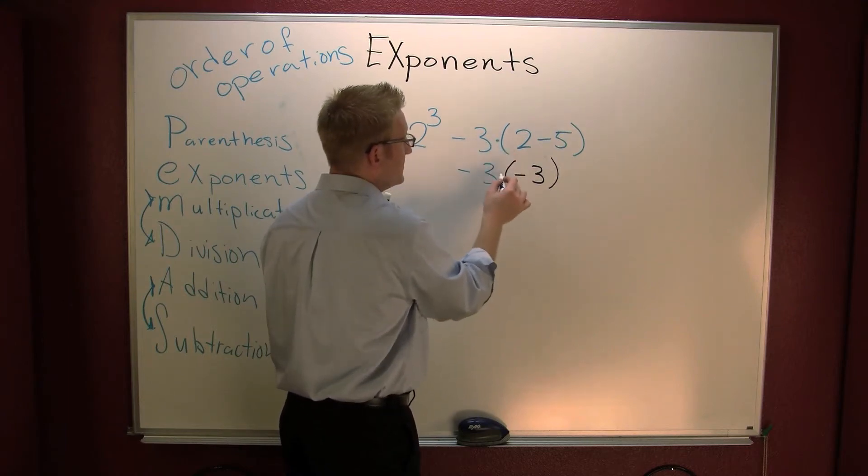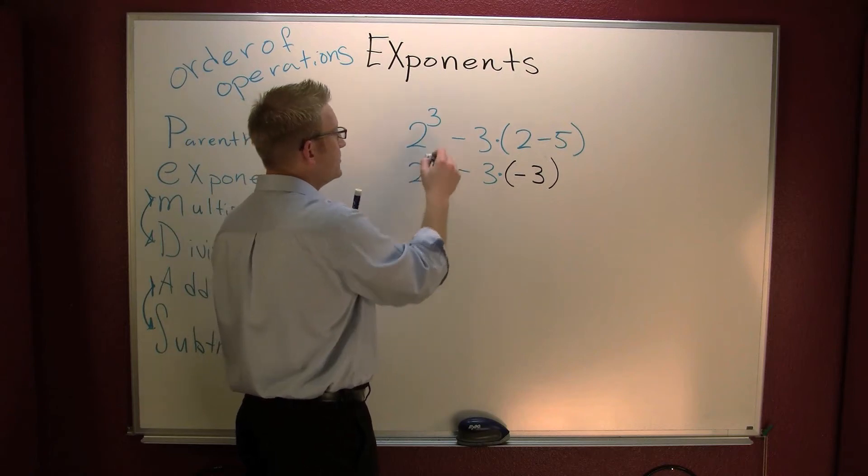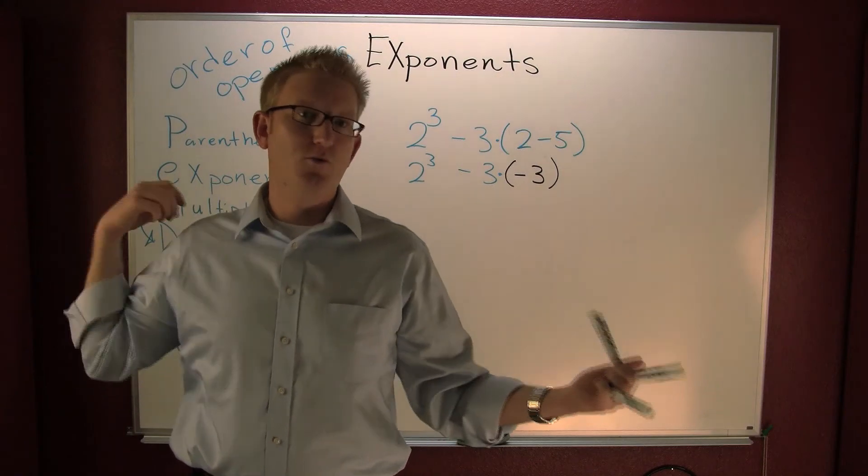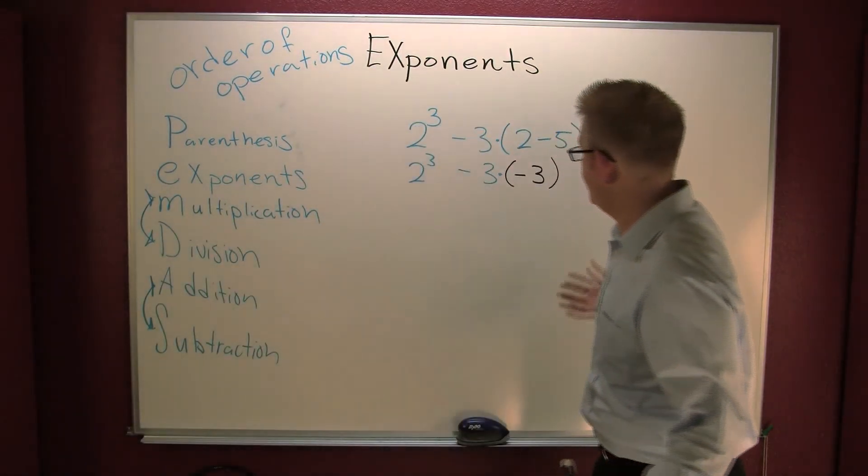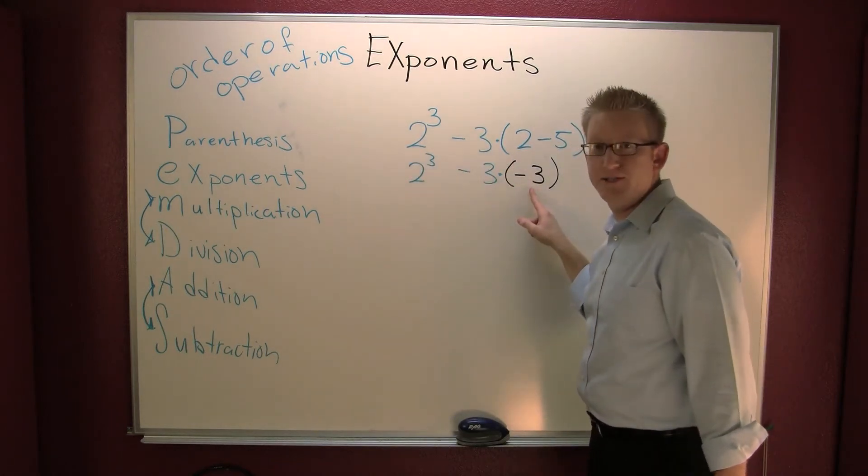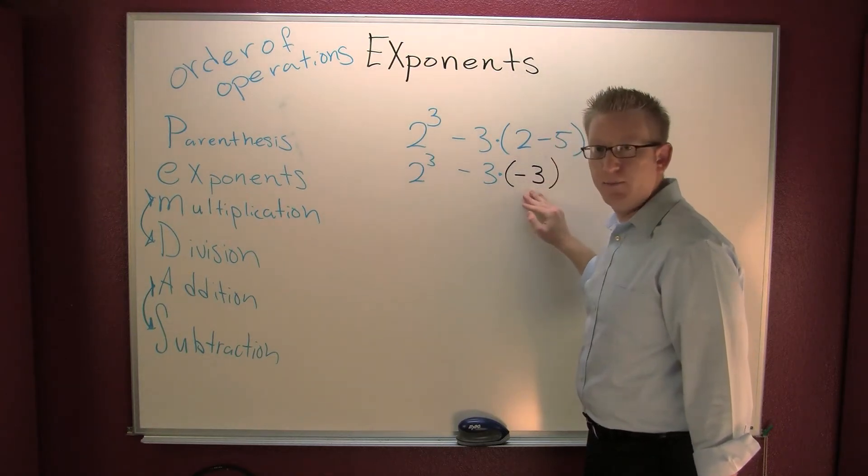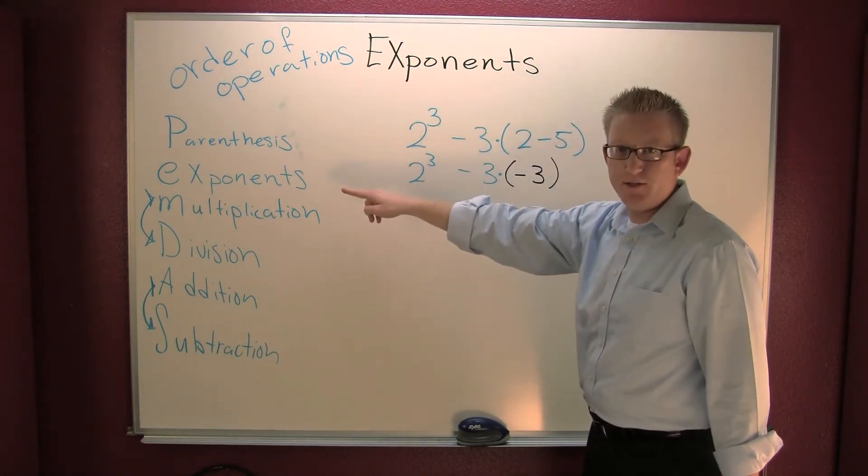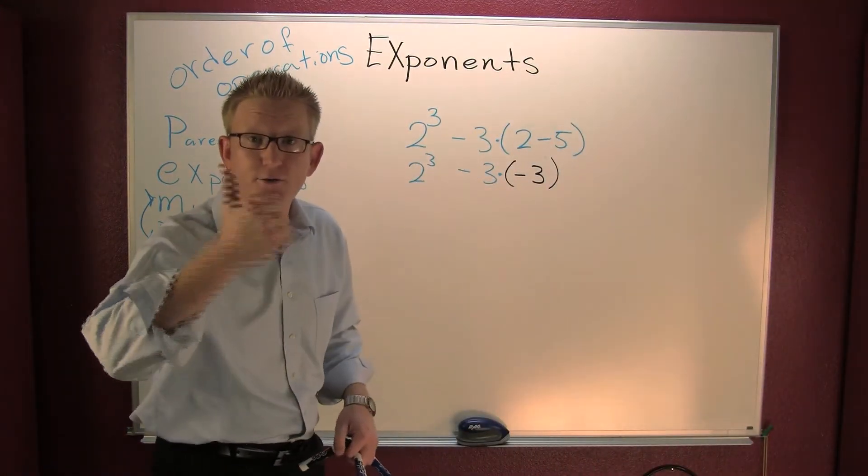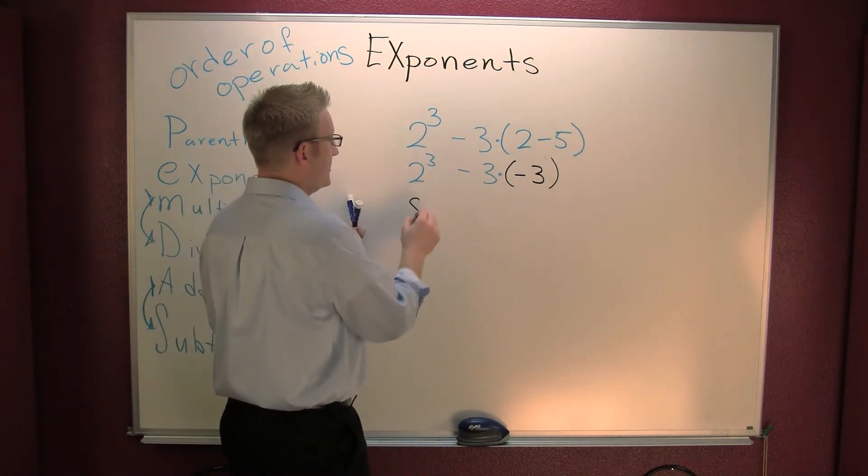My operation was multiplication. My operation is still going to be multiplication. Now I got two to the third. So if we're following this order of operations, what's next? Do I have parentheses? Yes. So I go inside those parentheses. Is there anything I can do? No. Okay. Leave them alone. Move down. Exponents. Awesome. Two to the third, that's two times two times two, or eight.